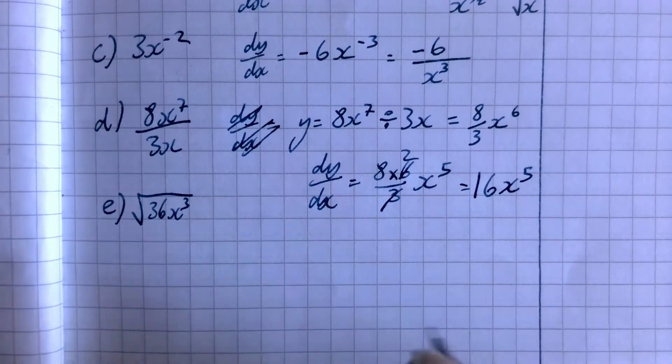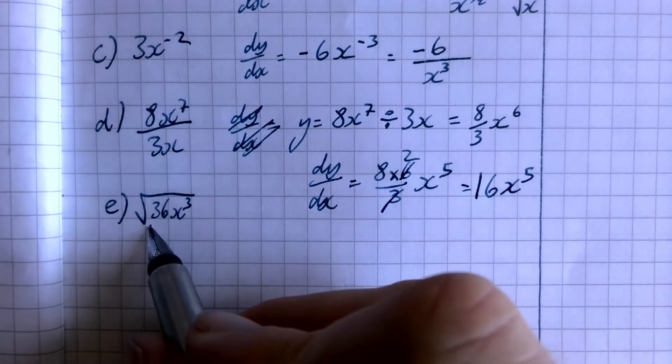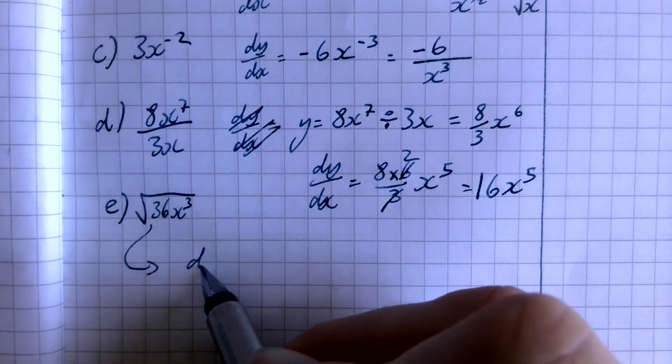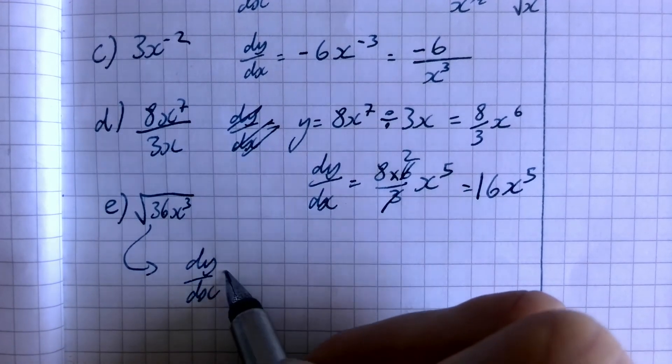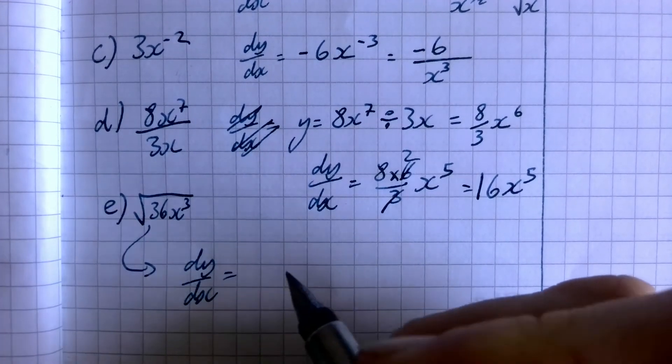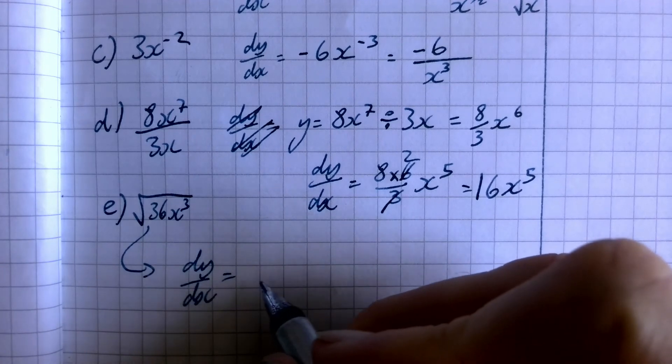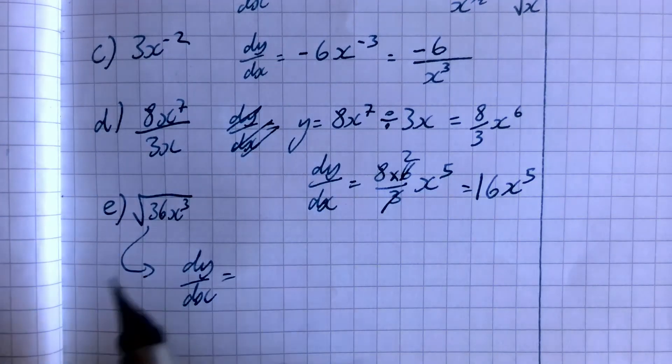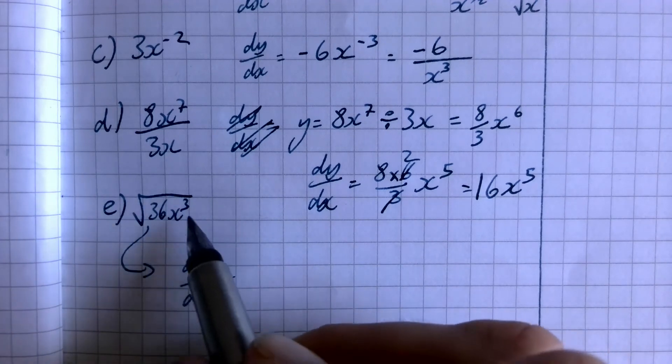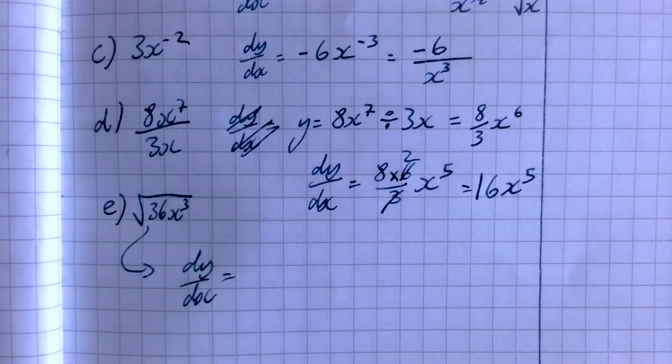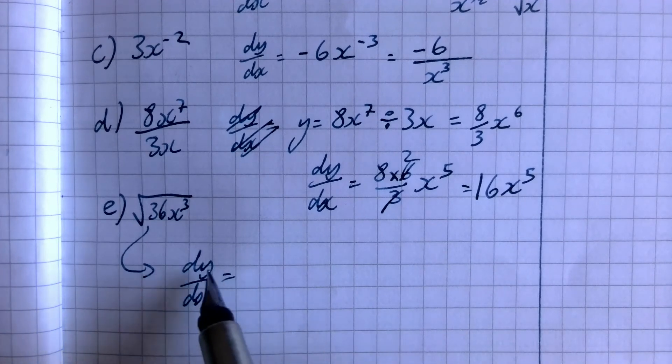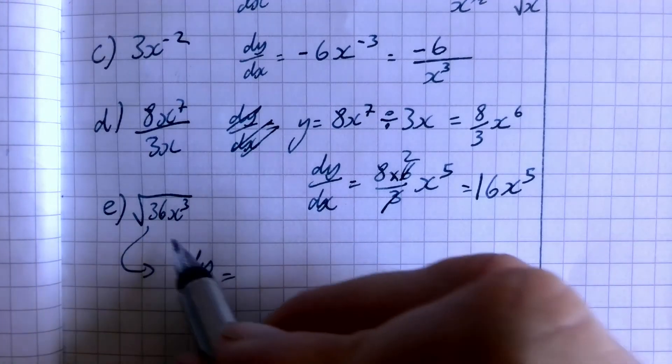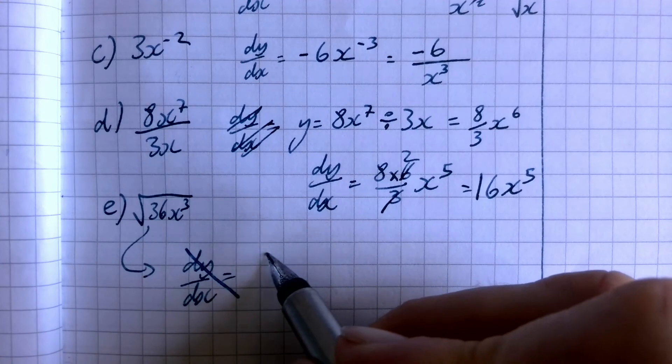And the last one. We shall say dy over dx. We know the square root of 36. In fact, I'm starting again, aren't I, before you really want to get all of this sorted out as something that's as simple as possible so that you can put the rules on it before we start differentiating. So I'm going to cross that out again.